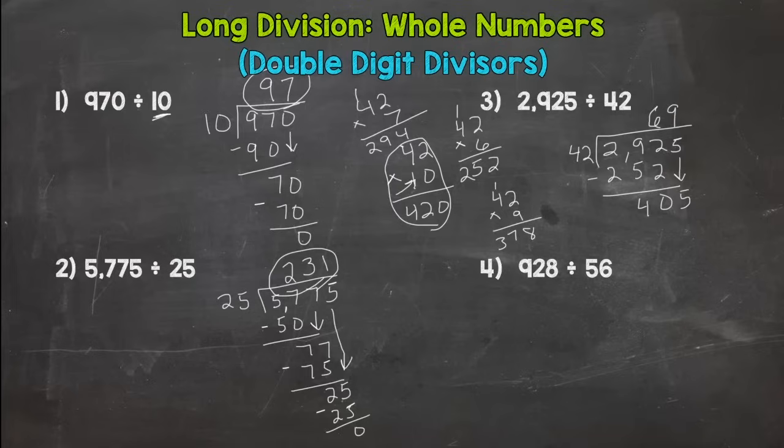So I put my 9 up here. 9 times 42 is 378 and I need to subtract. I'm going to need some borrowing in this one, a 10. Well I need to take again so it's actually a 9. 15 minus 8 is 7. 9 minus 7 is 2. So I get 69 remainder 27.